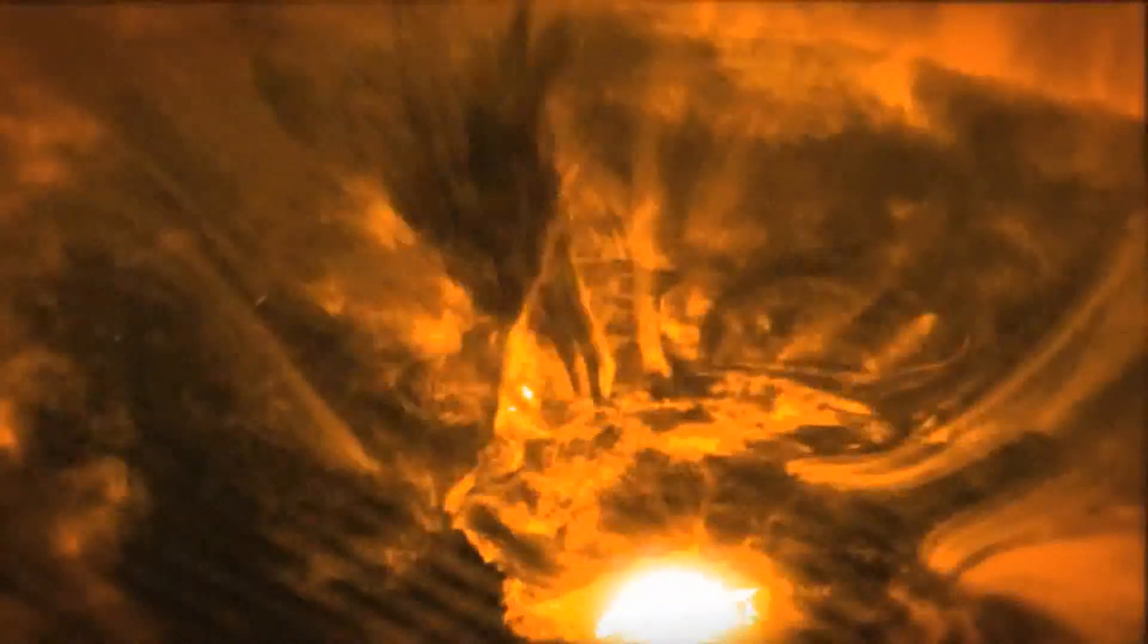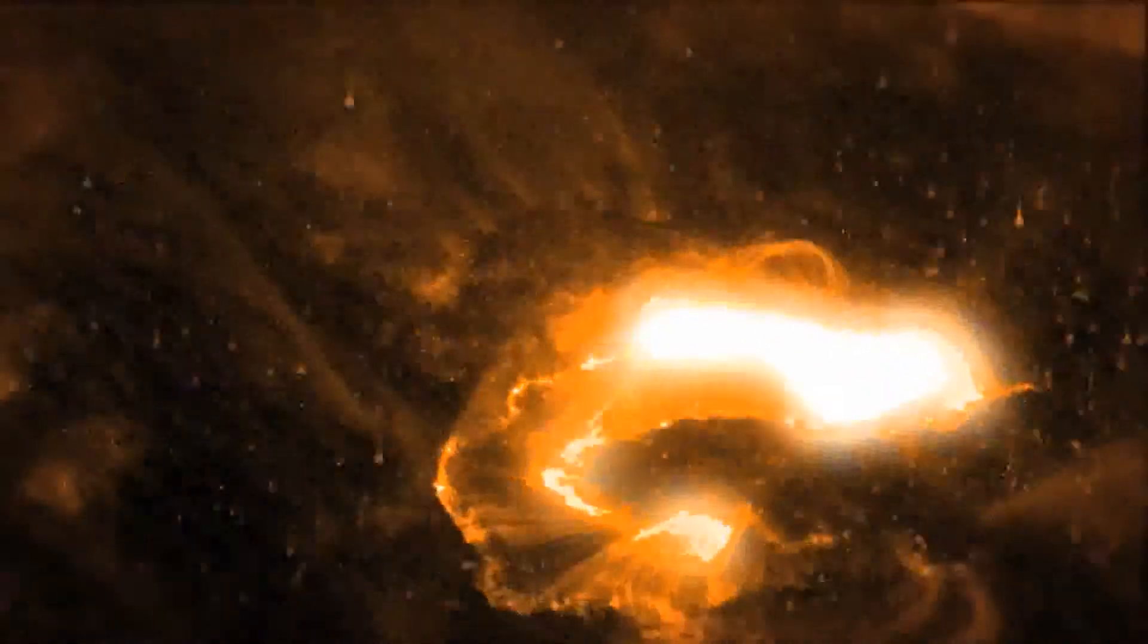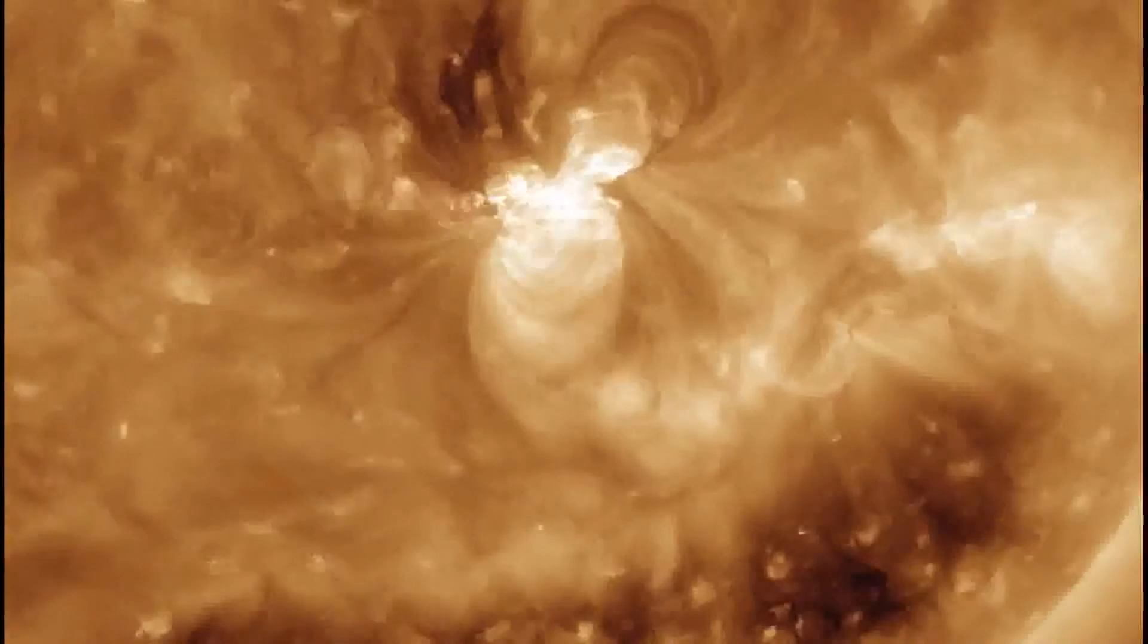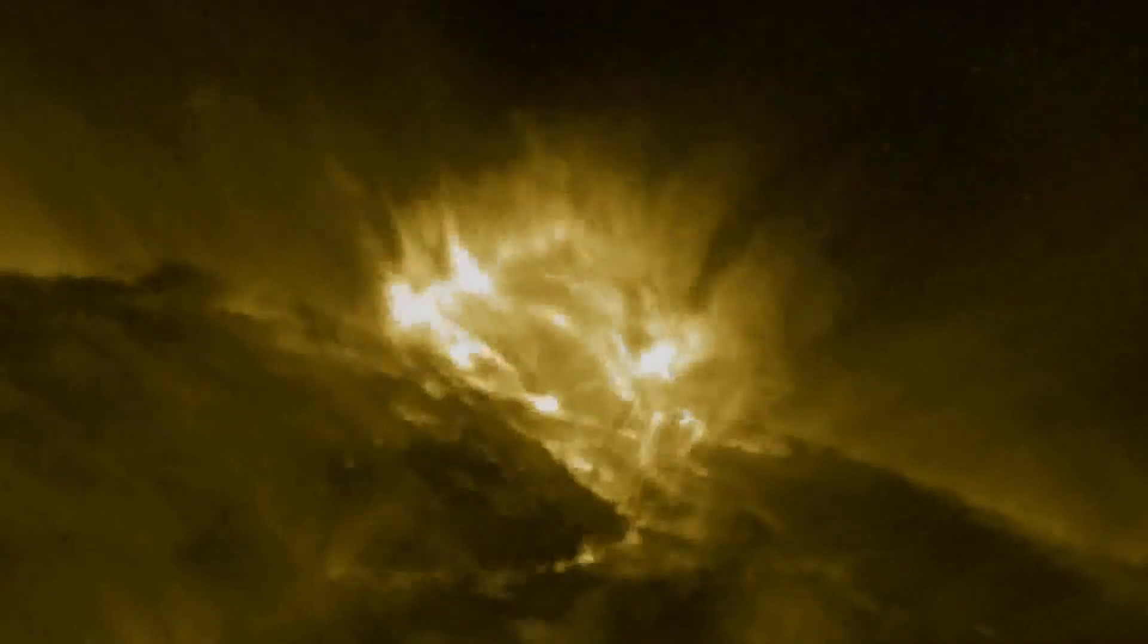So what are these solar eruptions? A solar flare is basically an explosion on the surface of the sun, ranging from minutes to hours in length. Large flares can release enough energy to power the entire United States for a million years.